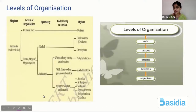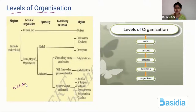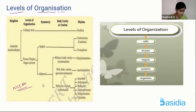Let us start with the first criteria: levels of organization. On the left-hand side, I have put an image from your NCERT. It might appear confusing at first, but don't worry — this is a very important flowchart that you need to remember. If you know this flowchart, 50% of animal kingdom is done for you. So please note this — this flowchart is very, very important.